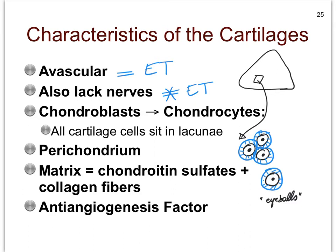The matrix of the cartilages is rich in something called chondroitin sulfates, which is why often people, in an attempt to fix the cartilage wearing out in their joints, supplement themselves with chondroitin pills that you can buy over the counter. We also see, in most of our cartilages, lots of collagen fibers. So what about these other two terms: perichondrium and anti-angiogenesis factor?